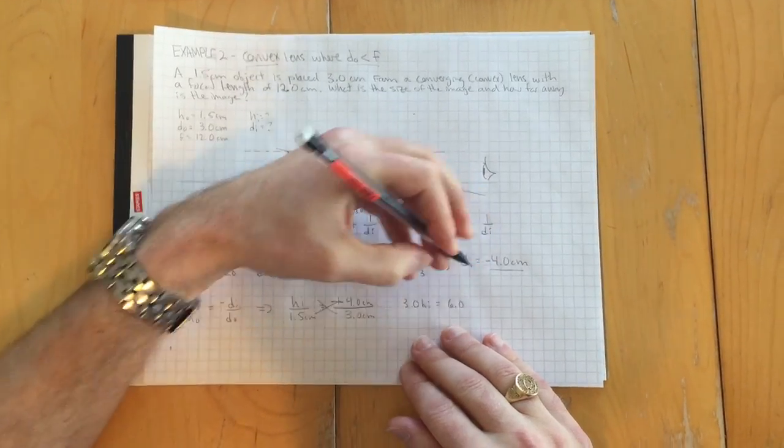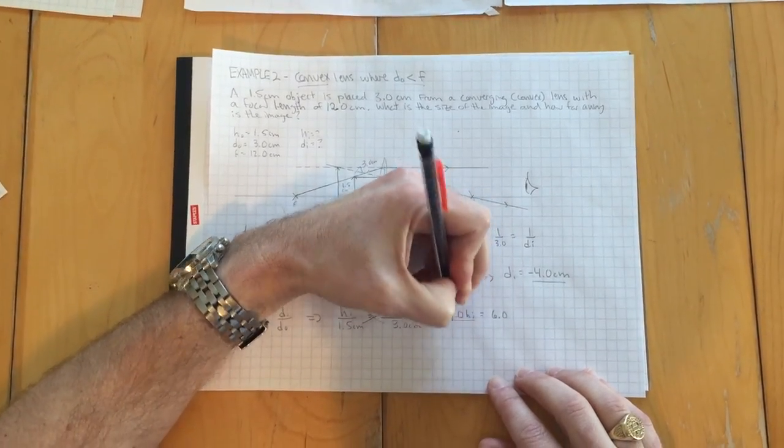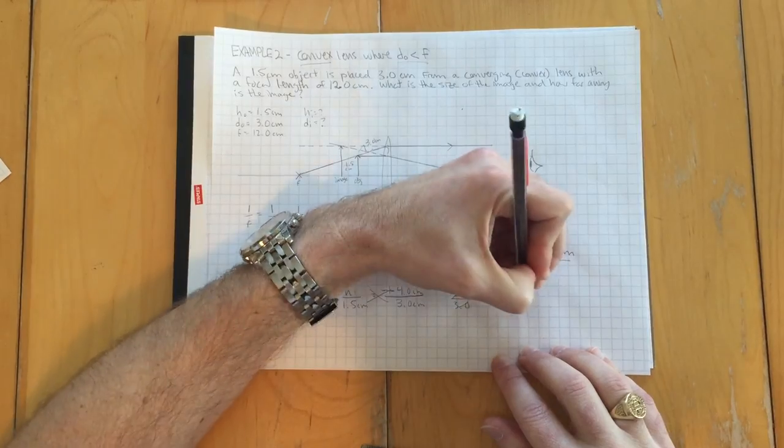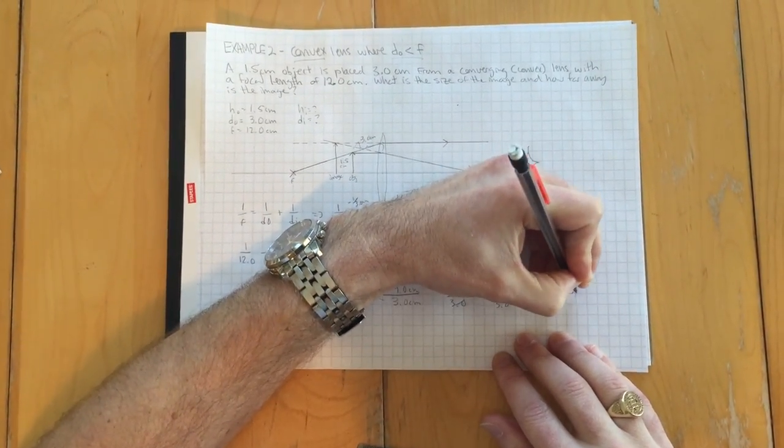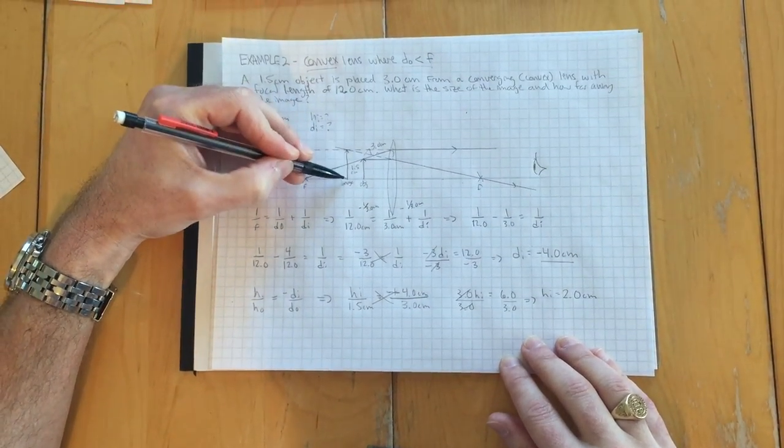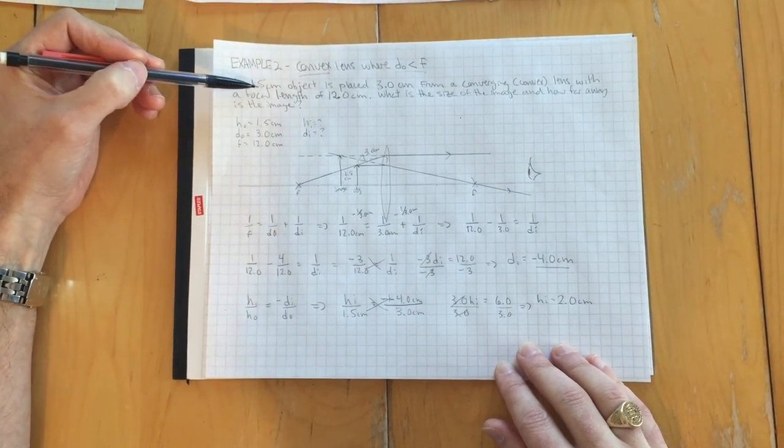Cross multiply that. We get 3 HI equals 4 times 1.5 is 6. I don't need my calculator for this example. My brain's a little foggy. I'm embarrassed for the last one we did. I should have been able to figure that out. Anyway, divide out three on both sides and we're left with HI. The height of the image will be two centimeters. Notice it's a positive this time because it's right side up and notice two centimeters is bigger than the actual object of 1.5 centimeters.